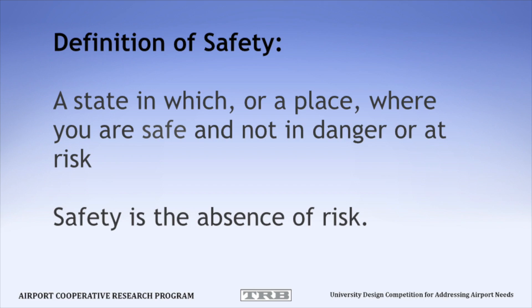Now, let's make sure we understand our target. What is safety? According to the Cambridge English Dictionary, safety is a state in which or a place where you are safe and not in danger or at risk. If you can reduce the risk of a situation, then you are increasing the safety. In the simplest terms, safety is the absence of risk. So there are four key components of a safety management system.